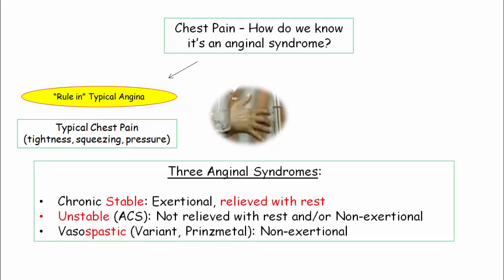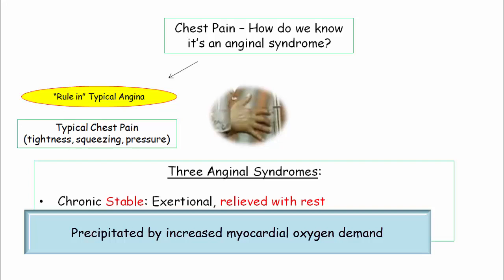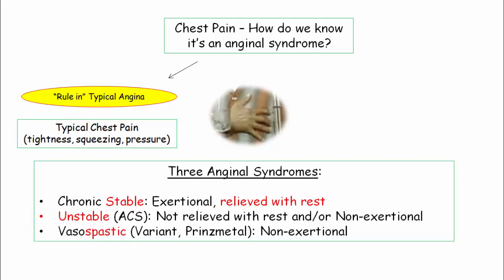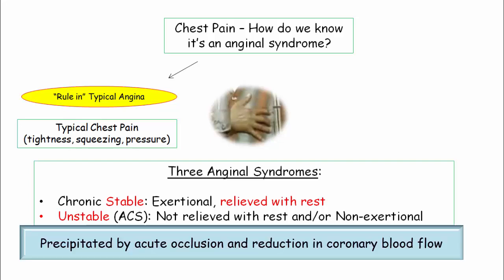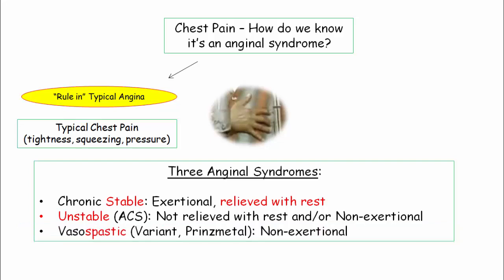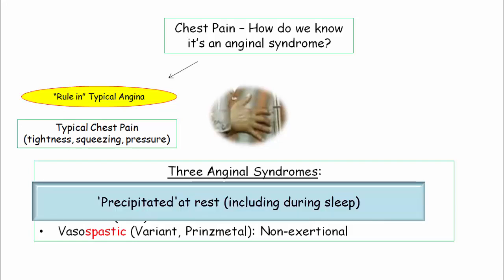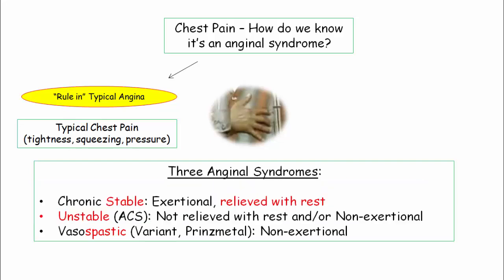The three anginal syndromes are: chronic stable angina, characterized by exertional chest pain that is relieved by rest — this symptom comes on during periods of increased myocardial oxygen demand, such as walking up a hill; unstable angina, also classified as an acute coronary syndrome, which may have onset with activity but is not relieved by rest, or may simply have onset at rest; and vasospastic angina, also referred to as variant or Prinzmetal's angina, which is non-exertional and frequently comes on nocturnally.